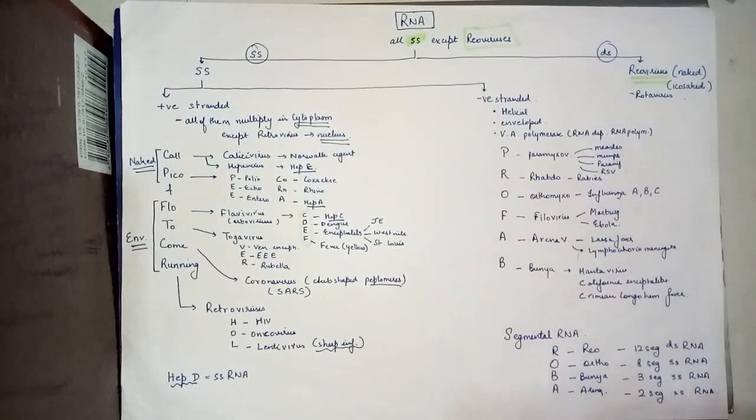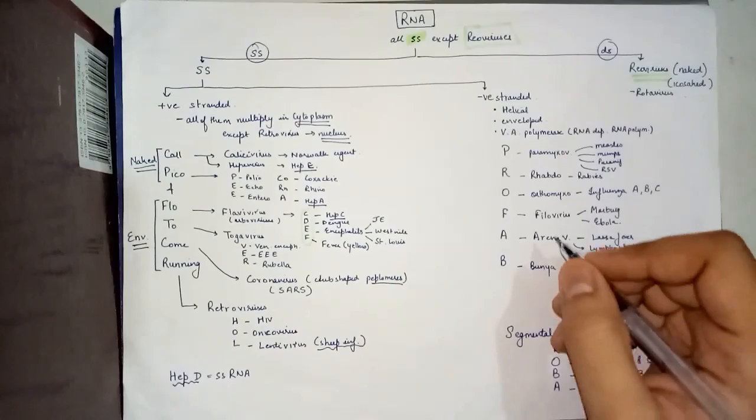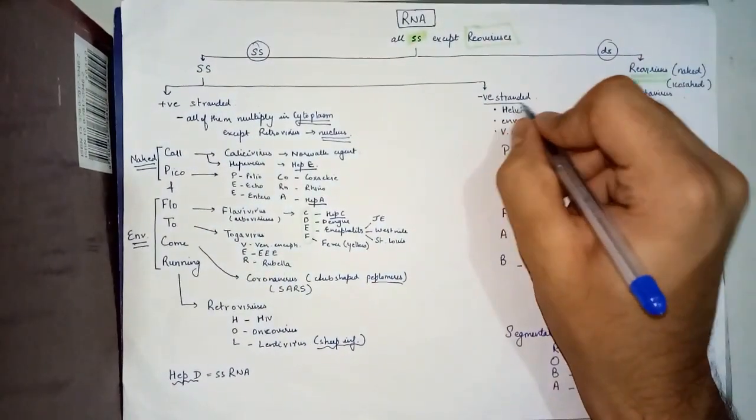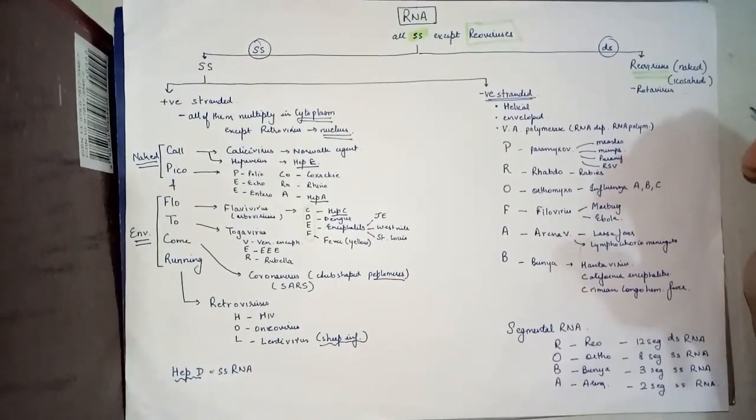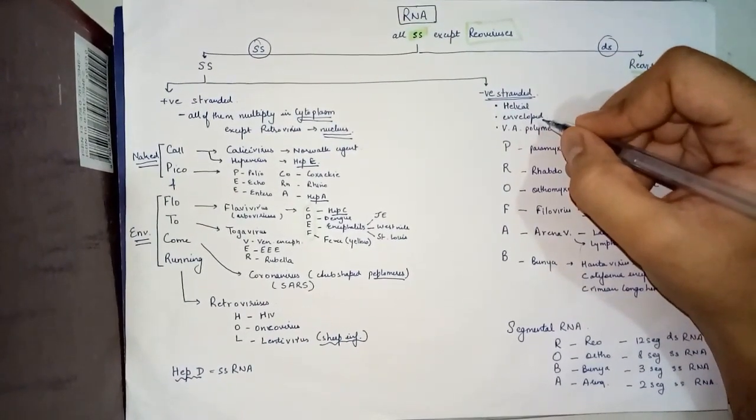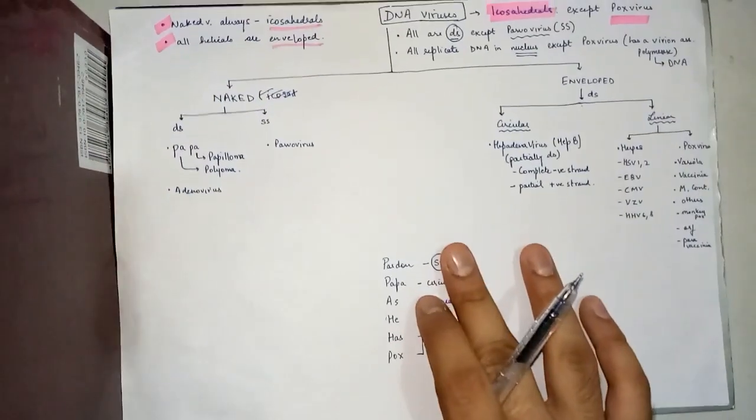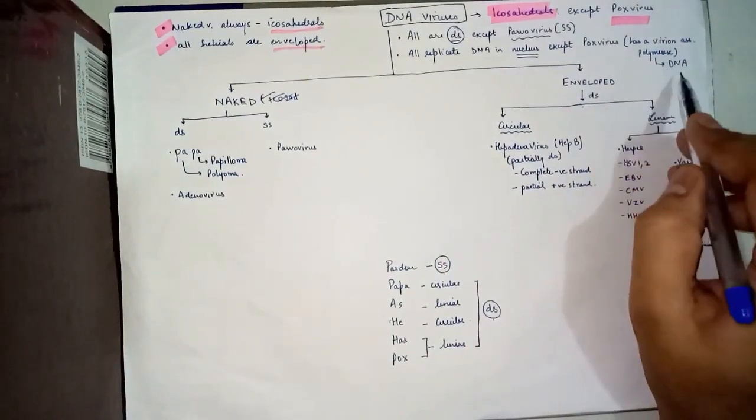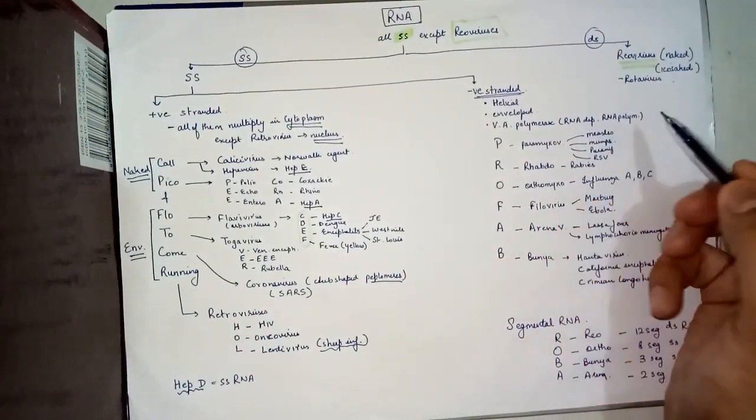Moving on from positive stranded to negative stranded, a couple of generalized points about negative stranded is that they are helical, they are enveloped, and they have a virion associated polymerase. Just like we saw pox virus has a polymerase but it was a DNA polymerase, here the negative stranded viruses have an RNA dependent RNA polymerase.